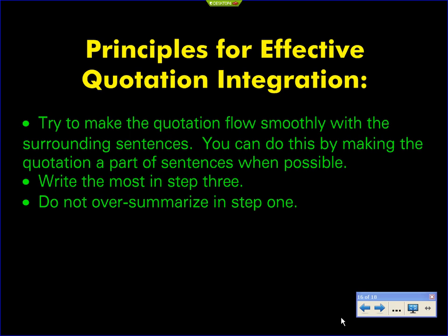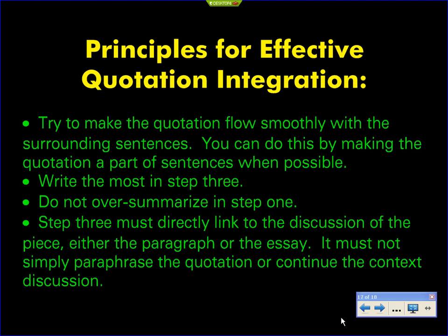Don't over-summarize in step one — I don't need more summary than absolutely necessary. Remember, step one exists purely to alleviate confusion. And step three must not simply paraphrase the quotation or continue the context discussion — don't tell me what the quotation said; I just read it. So if I just read about the image burning itself onto her eyelids, step three shouldn't say 'the image is so powerful that it leaves a lasting impression in Lily — she sees the house even when she has closed her eyes.' Don't repeat the quotation. It's time to talk about something new. Colin picked it up quickly — 'oh, you're talking about character change.' Imagery connected to character change — that's the new idea. Always go forward; make a point with it.